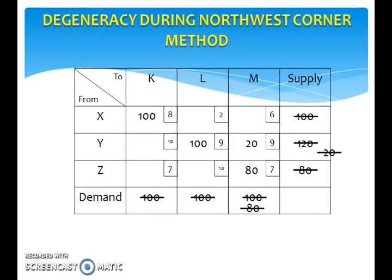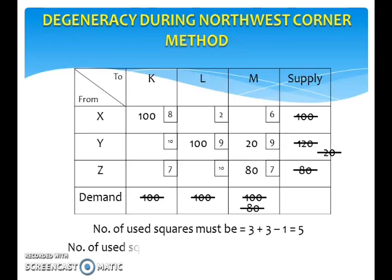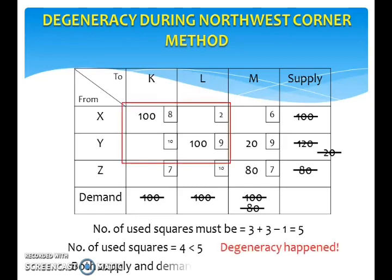In this problem, there are 3 rows and 3 columns. Thus there must be 5 used squares, but here there are only 4 used squares. So degeneracy has happened. Degeneracy happened at the first square where both supply and demand were satisfied simultaneously.